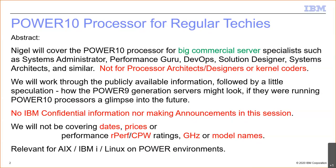We'll go through publicly available information — I'm not going to be leaking any confidential things and I'm not going to make any announcements in this session. We'll have a look at the Power 10 processor, where information is available. For the Power 10 servers the information is not yet available, but we'll pretend we're putting Power 10 chips into a Power 9 server to get an idea of what it would look like. We also can't cover some things, partly because I like my job.